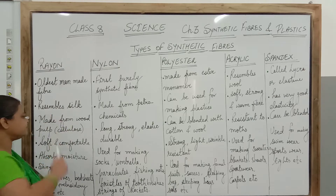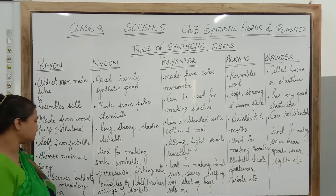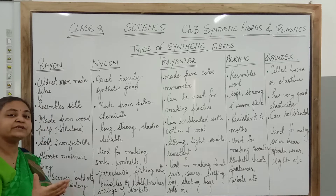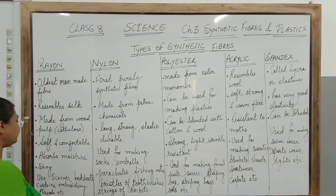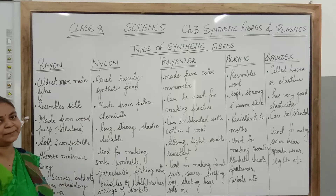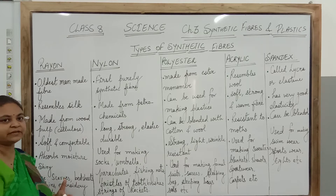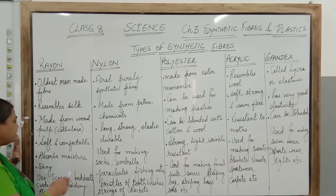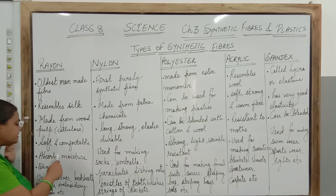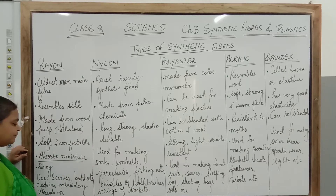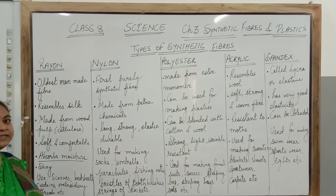Rayon is made from wood pulp or cellulose polymer. It is like the natural fibers — it has the property of absorbing moisture, it is soft and comfortable to wear, like cotton. We can also call it soft cotton. It has the property of absorbing sweat and moisture, and that is why in the summer season it can be worn very comfortably.